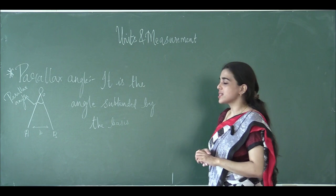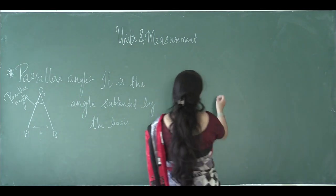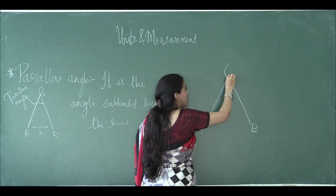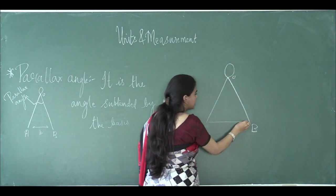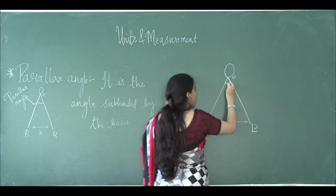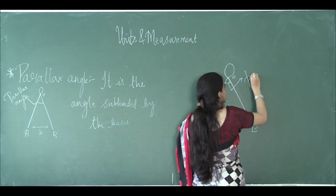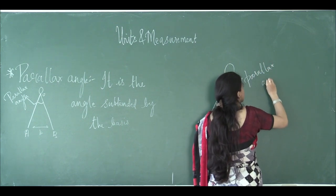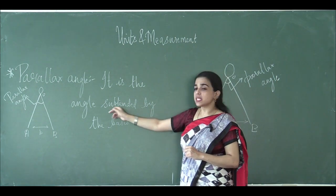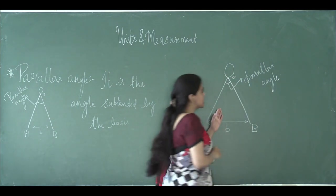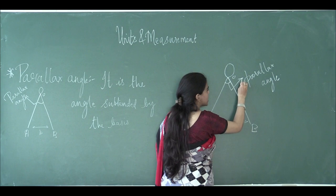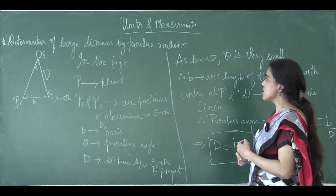The next concept is the parallax angle. In the diagram we have points A and B and an object O. The segment AB is the basis. The angle formed at the object O, subtended by the basis AB, is called the parallax angle.